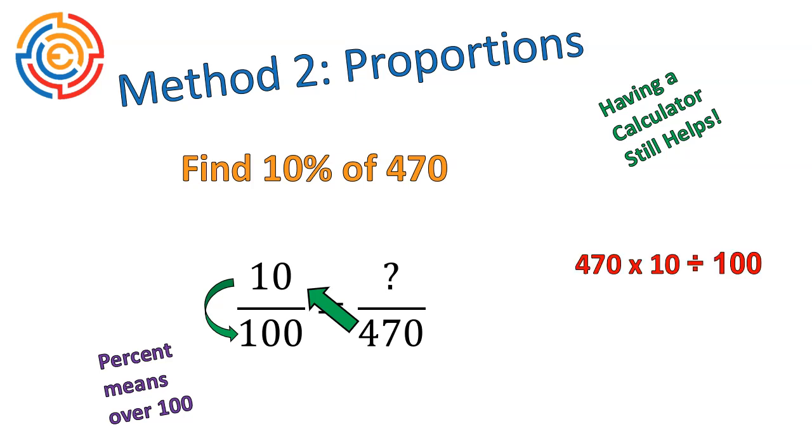In a math sentence, it would look like this: 470 times 10 divided by 100. 470 times 10 is 4,700. Divided by 100 is 47. If you want to solve it using your calculator, you would say 0.1 times 470. And you'll find that it's the same exact answer.